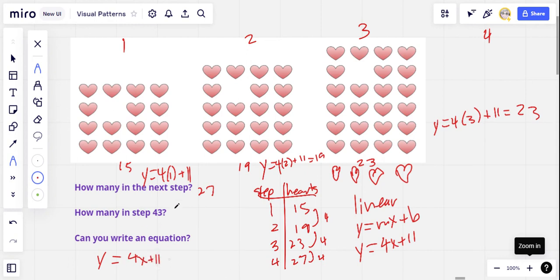And now we can use that to figure out how many in step 43. So y equals 4 times step 43 plus 11. So 4 times 43. Well, 4 times 40 is 160. 4 times 3 is 12. So that's 172 plus 11 would be 183 hearts in step 43.